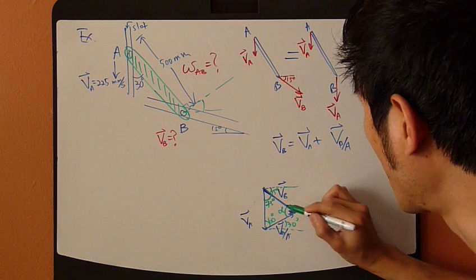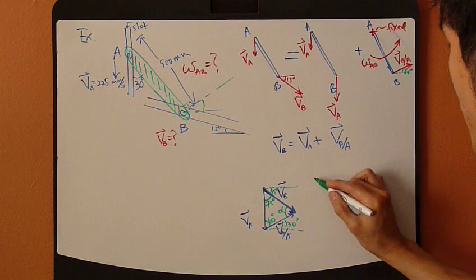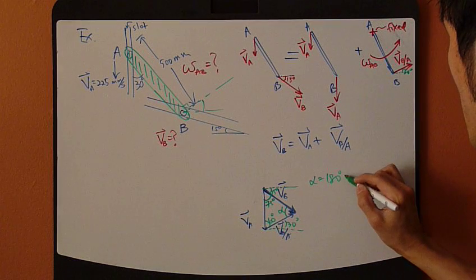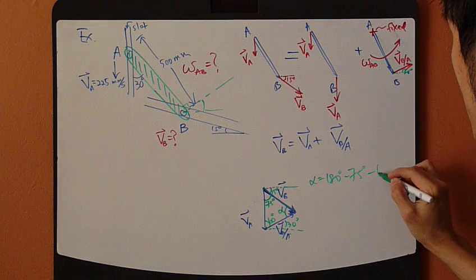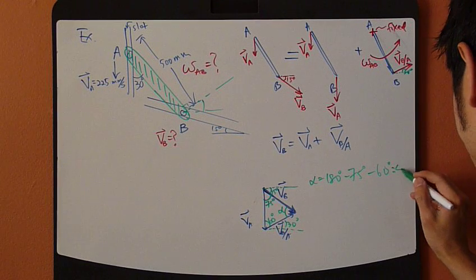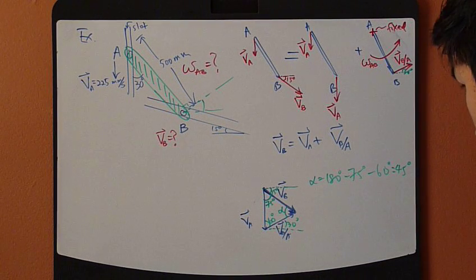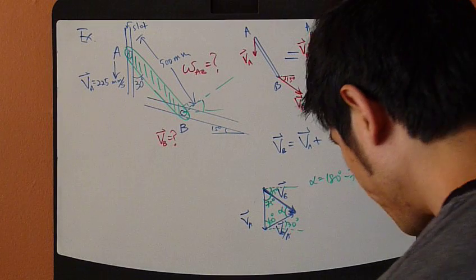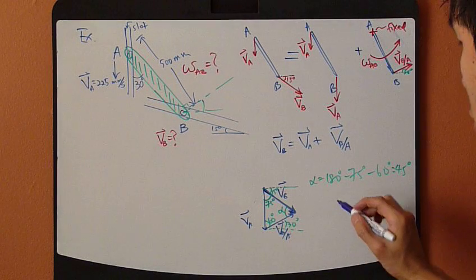Now, let's call this alpha, and you do know alpha. So alpha is 180 minus 25 minus 60. So that gives you 45 degrees.